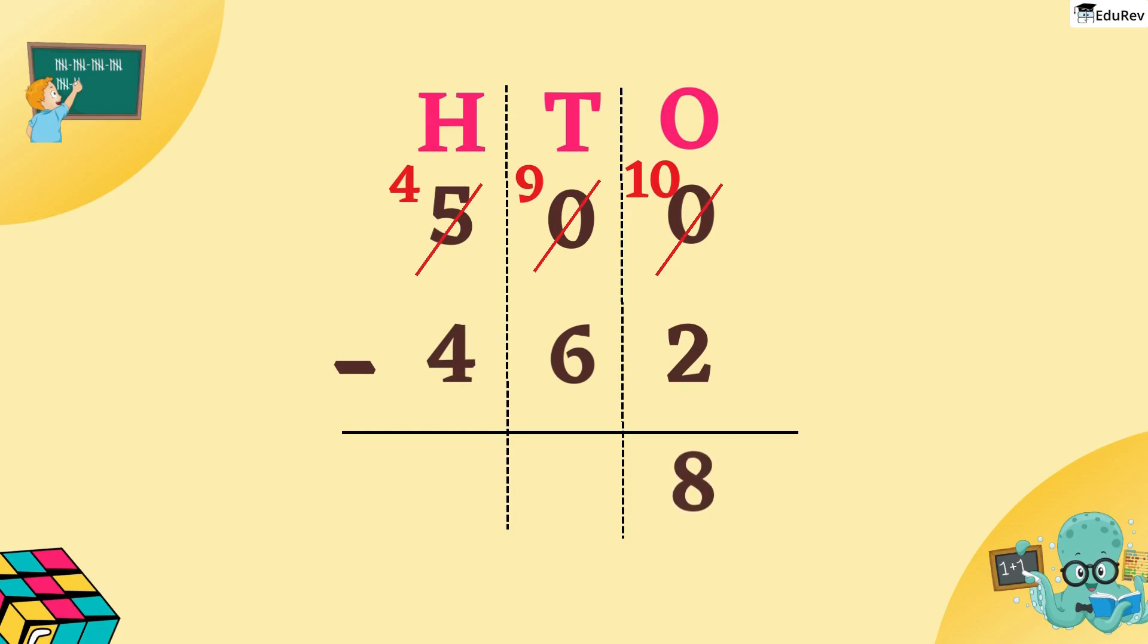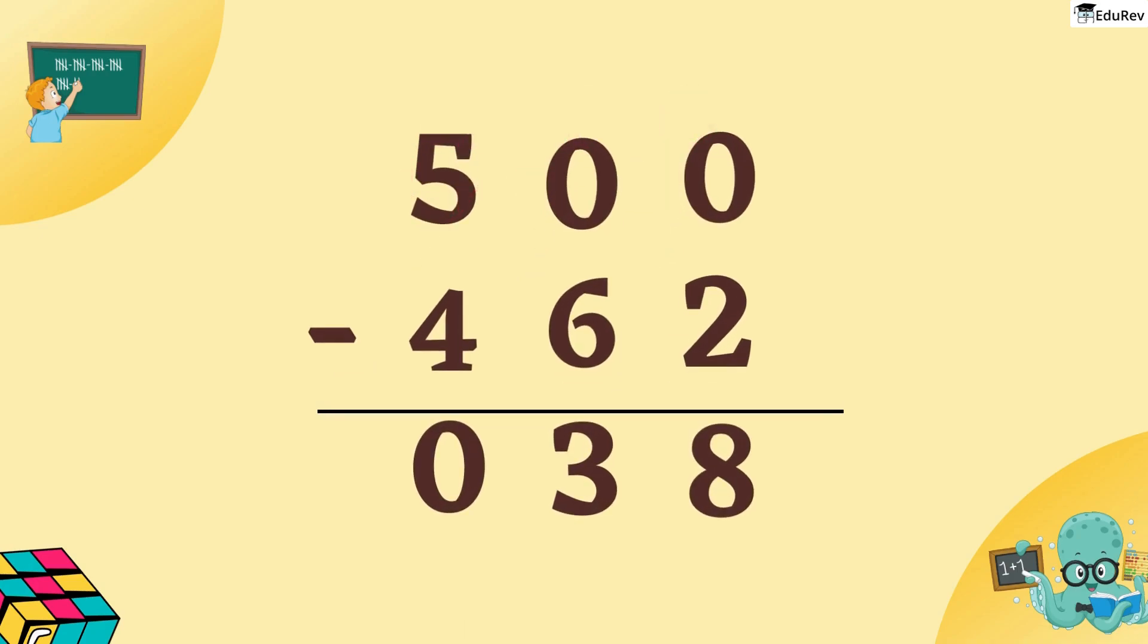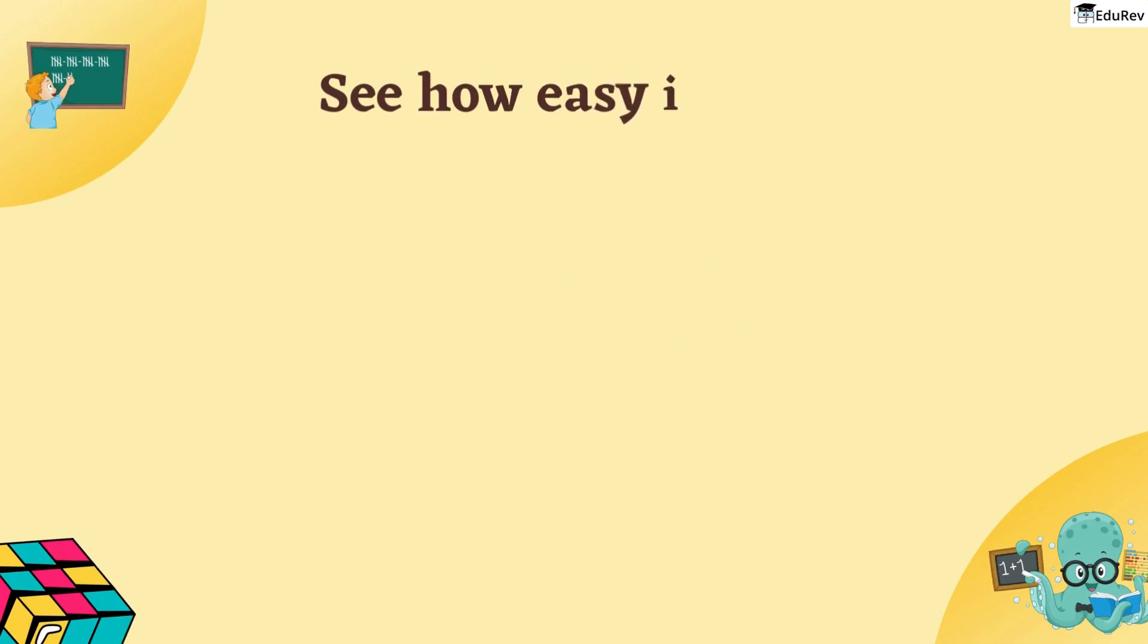In 10s column, 9 minus 6 becomes 3. And in 100s column, 4 minus 4 is equal to 0. So, the final answer is 28. See how easy it was?